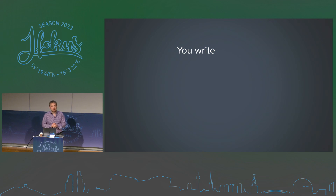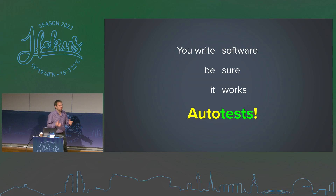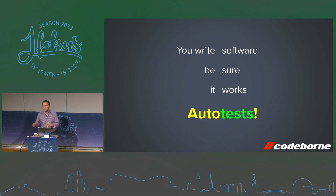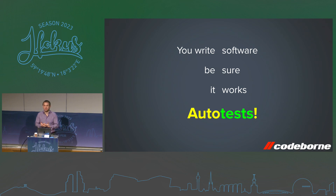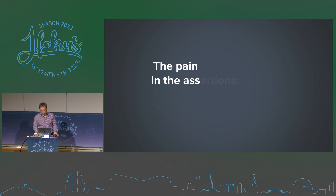We are talking about automated tests. When you or your company writes some software, you want to be sure that this software works — not only right now when you clicked and tested it, but also in the future after any refactoring or changes. The only way to be sure is automated tests. At Codeborn, developers write production code, write tests, and maintain those tests, which is why I have great experience fighting with unstable tests.